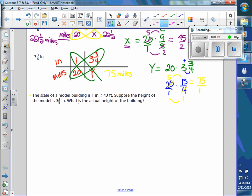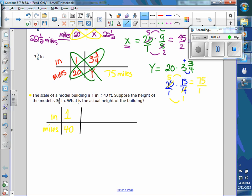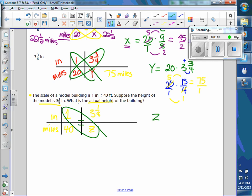So on the second example, it's really the same thing, the scale of a model building is now different. It's 1 inch represents 40 feet, but the process is the same. Suppose the height of a model is 3 and 1 eighths inch, that's in the model. What's the actual height? So we just put a z there and do the same cross multiply because this is a ratio or proportion. So we say z equals 40 times 3 and an eighth. 3 and an eighth is 25 eighths.